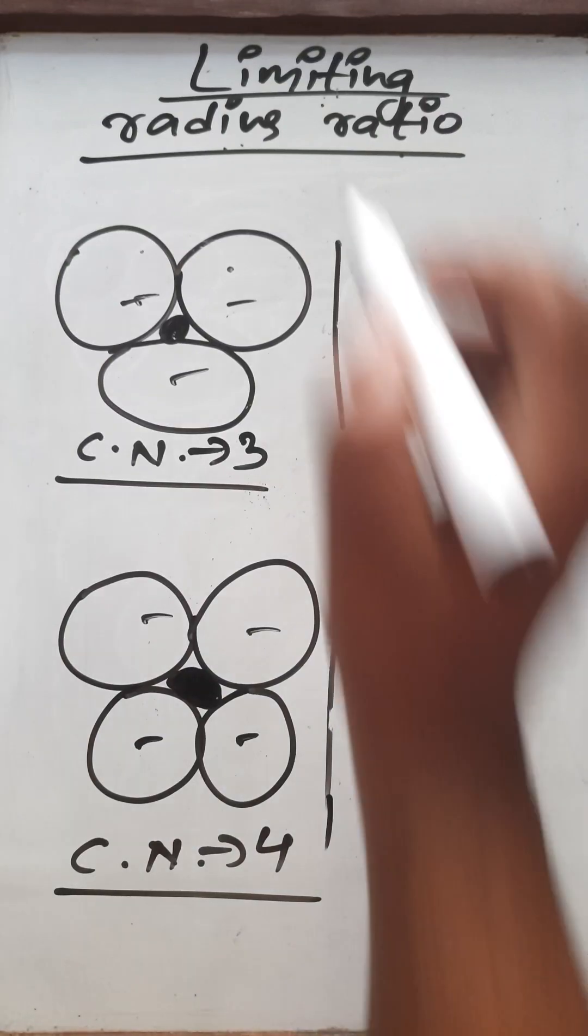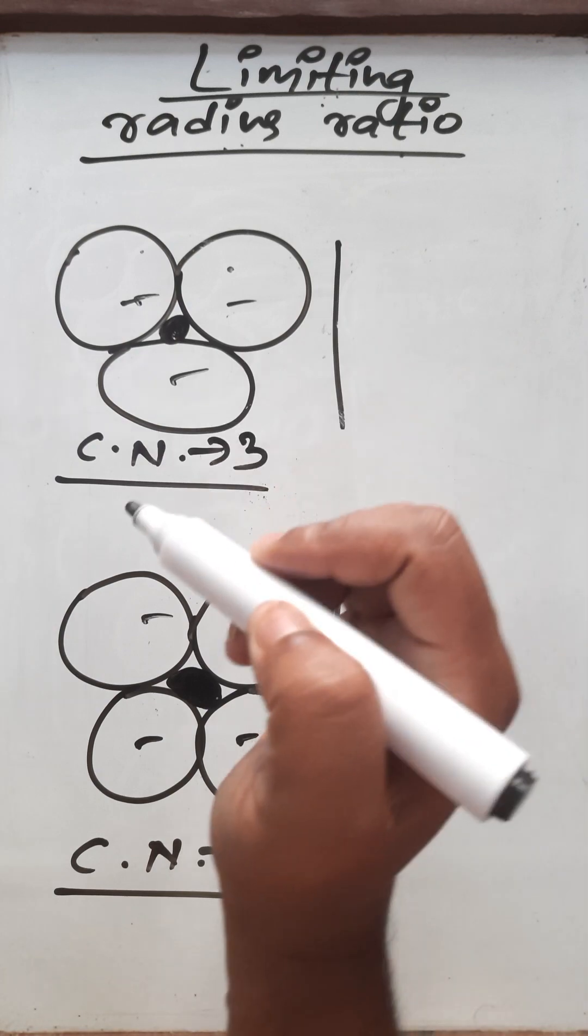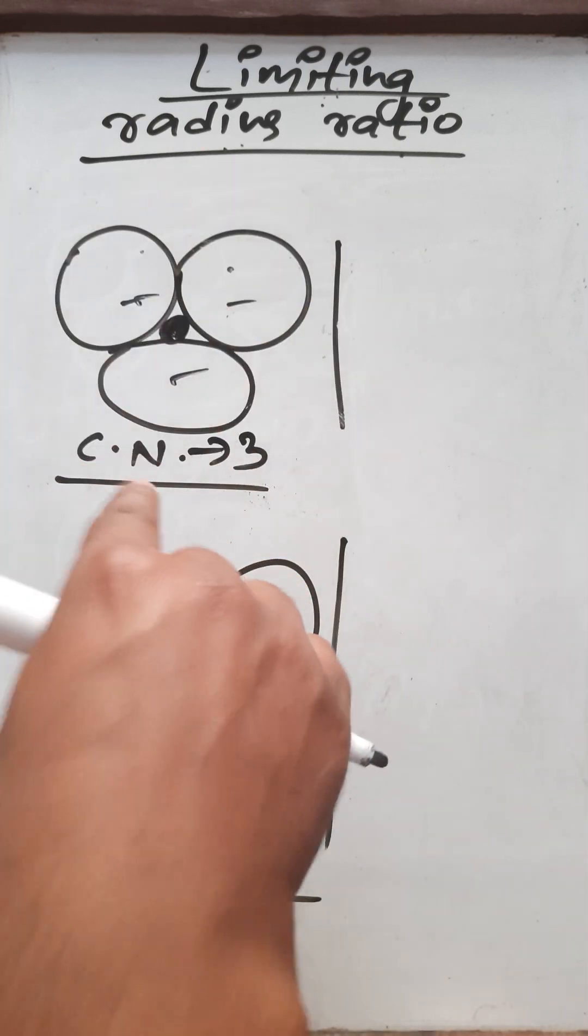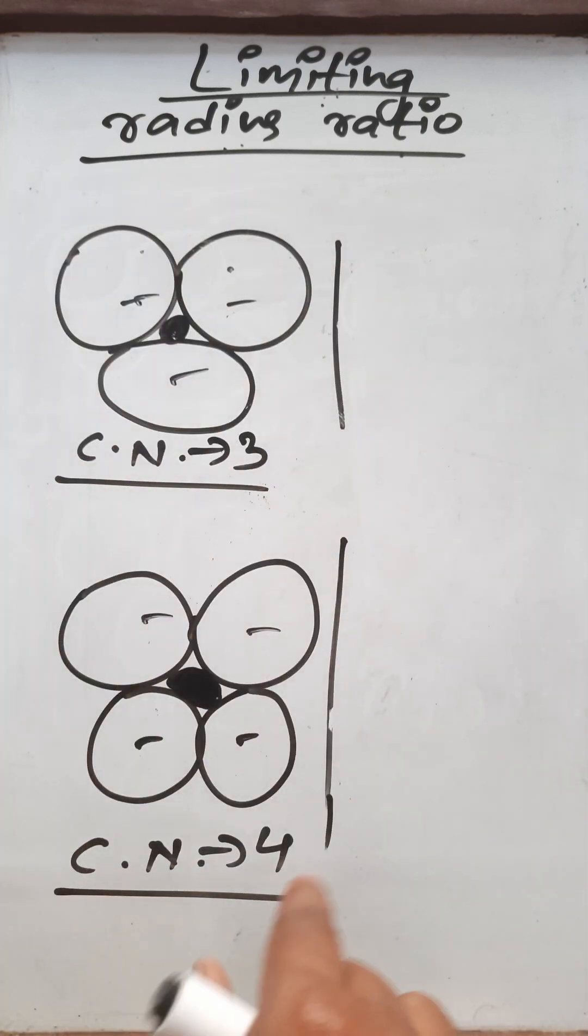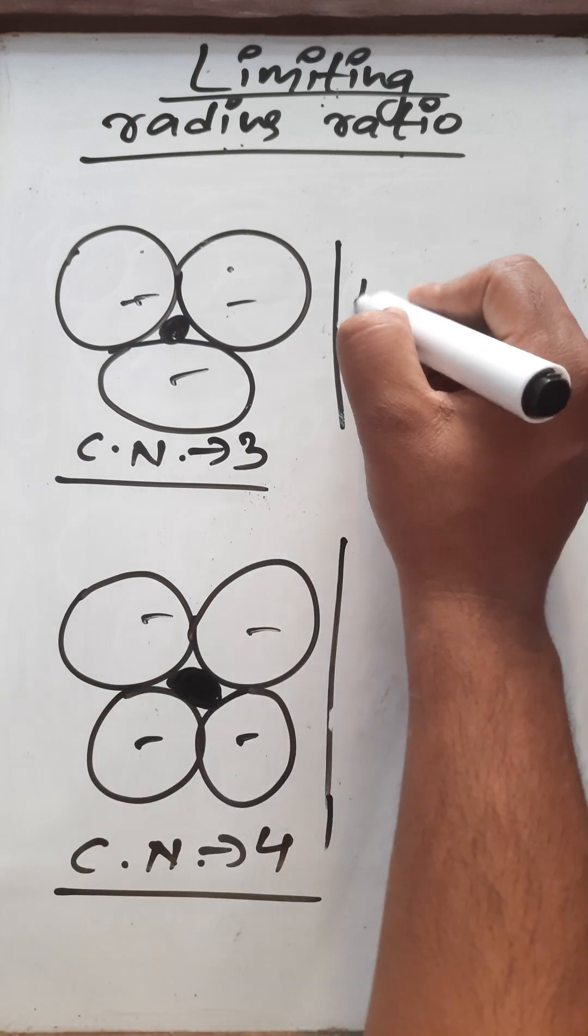In this video, I'm going to explain the limiting radius ratio value. For this, I've taken two different examples: one with coordination number three, another with coordination number four. Mathematically, it was calculated...